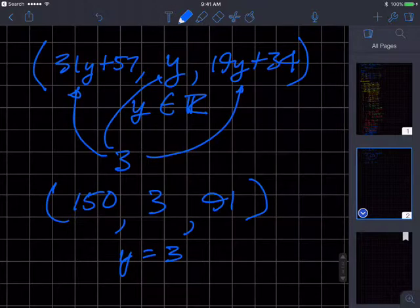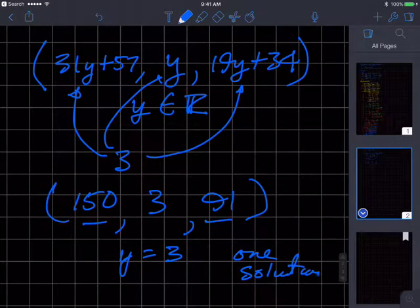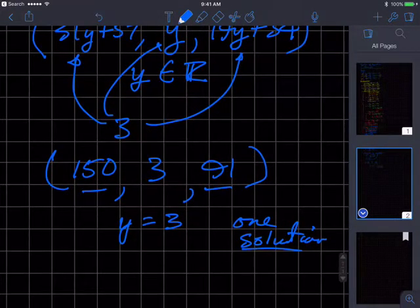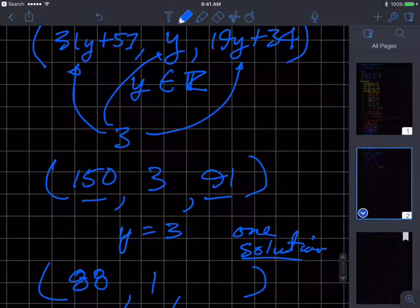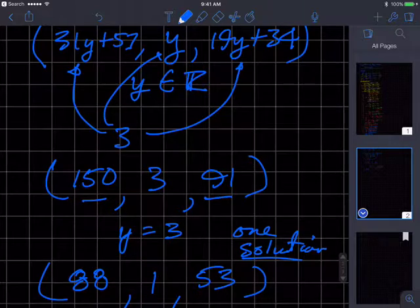Here's another solution. If I put y equals 1, what do I get? That was the easier one to choose. So 31 plus 57 is 88, and 19 plus 34 is 53, I think. Okay, so that's how I would have done it via elimination. All right, now I'll go see how to spell elimination. Take care. Bye.